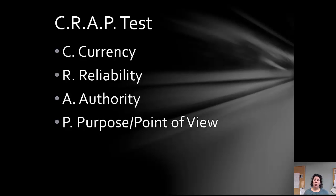I have some tips for how to evaluate websites you find when looking for sources for your career paper, and it's called the CRAP test — C, R, A, P. That stands for Currency, Reliability, Authority, and Purpose. Is the website current? Is it reliable? Who's responsible for it? And what is the purpose of it? Now I want to circle back to something I said about biggoose.org that I forgot.